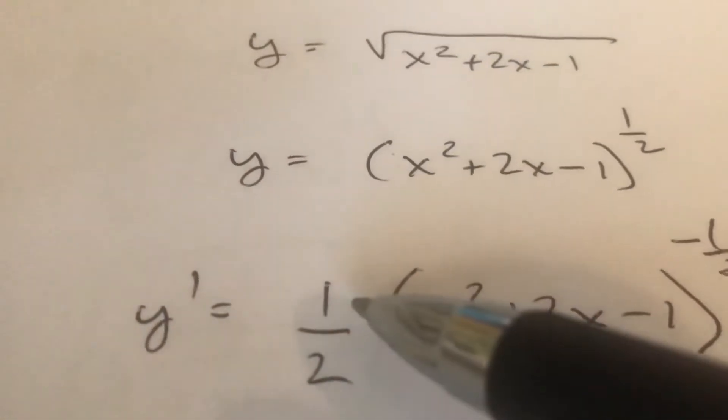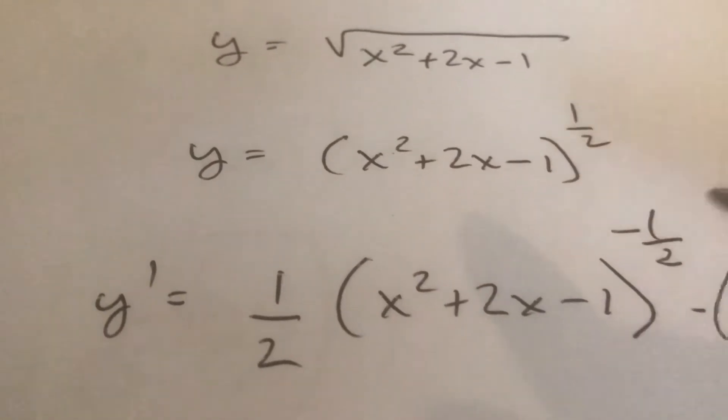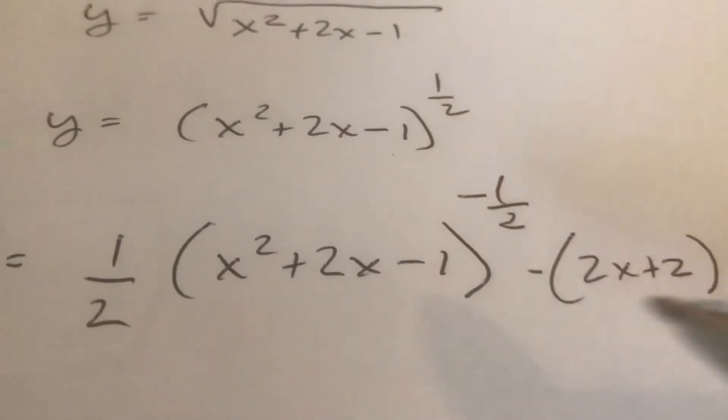So you bring the 1 half down, rewrite the argument, subtract 1, don't forget to subtract, so you get negative 1 half times the derivative of what's inside.